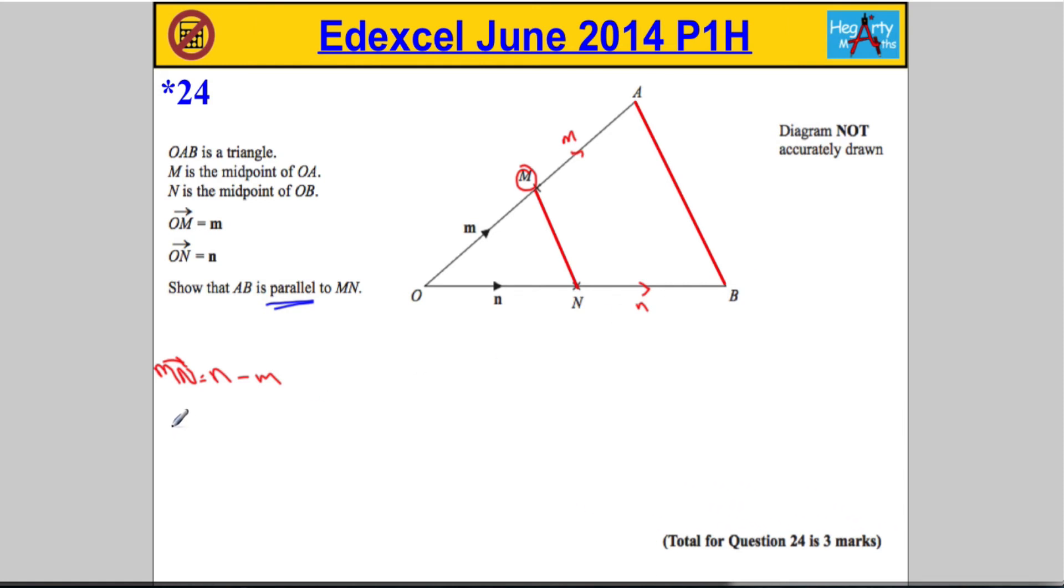So the vector AB must be equal to 2n minus 2m. Because this distance along here is negative 2m, and this distance here, or this vector here, is positive 2n.